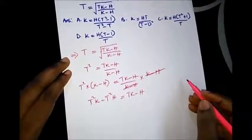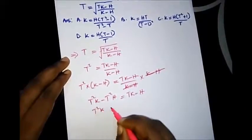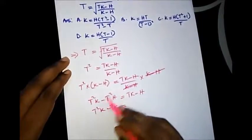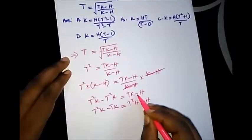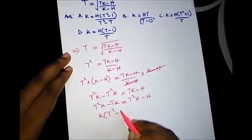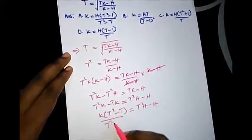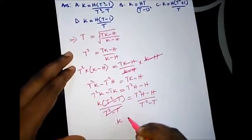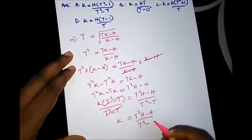From here, let's bring K to the left hand side and bring other values to the right. So we have T squared K minus TK equal to T squared H minus H. What is common here? K is common. So we factor out K: K bracket T squared minus T equals T squared H minus H. From here, divide both sides by T squared minus T. We have K is equal to T squared H minus H over T squared minus T.